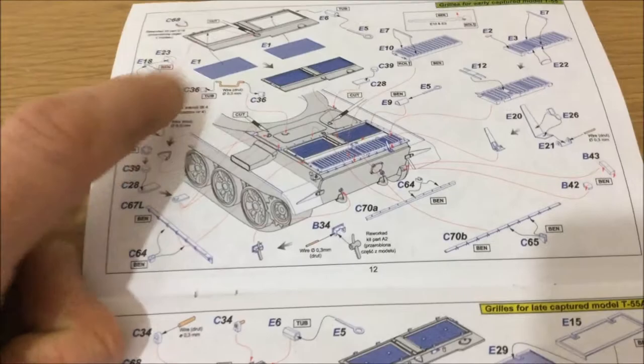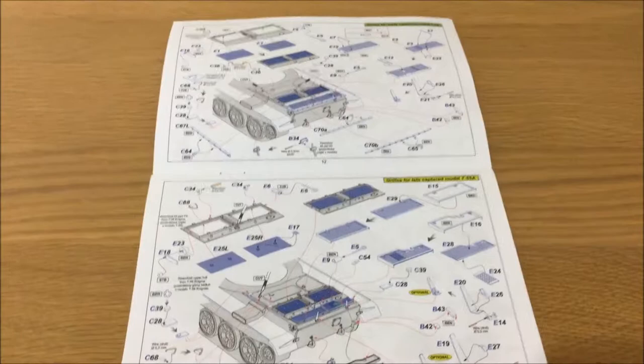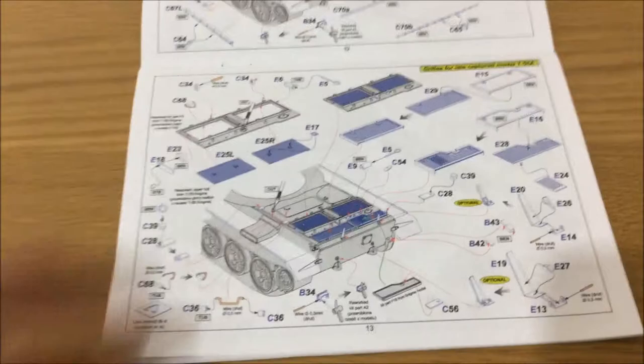This is nice that they give you, it's so you can make these little grab handles so each one is exactly the same. And here's the grills for the late model captured T-55A.